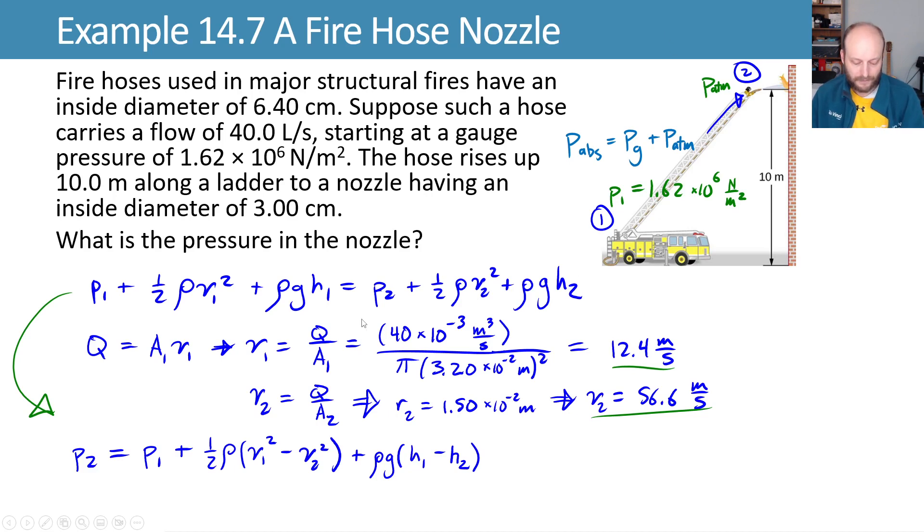P₁ is gauge pressure, so that's the gauge pressure of 1.62 × 10⁶ newtons per meter squared. ρ is the density of water, and this height difference is that 10 meters that we're sending that hose upwards. We plug this in, and what do we get?